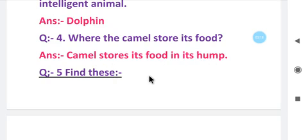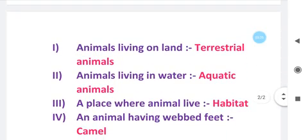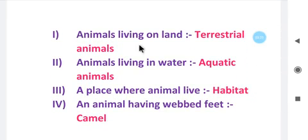Find this: Animals living on land - what are animals that live on land called? Terrestrial animals. Animals living on land are called terrestrial animals. Animals living in water - what are animals living in water called? Aquatic animals. Animals living in water are called aquatic animals.